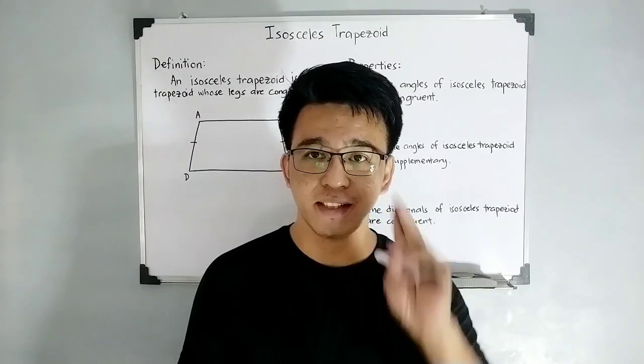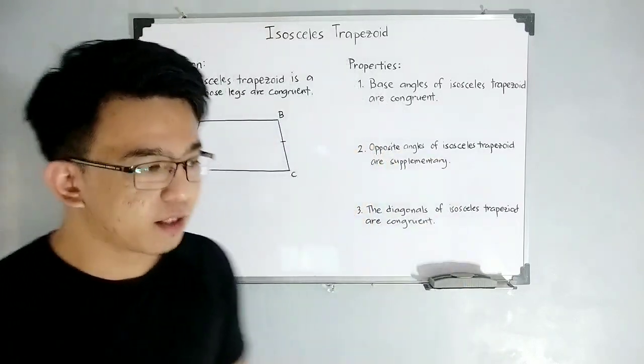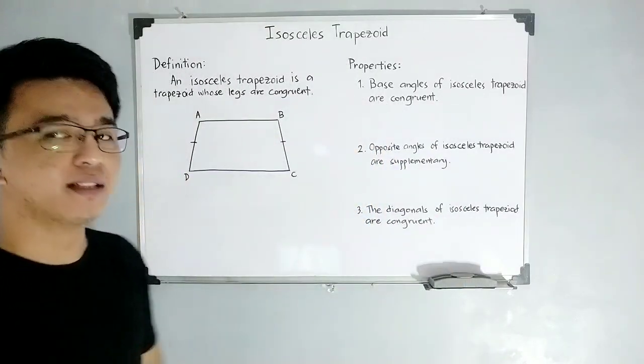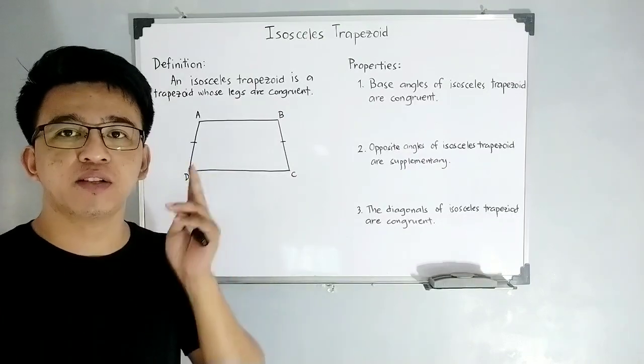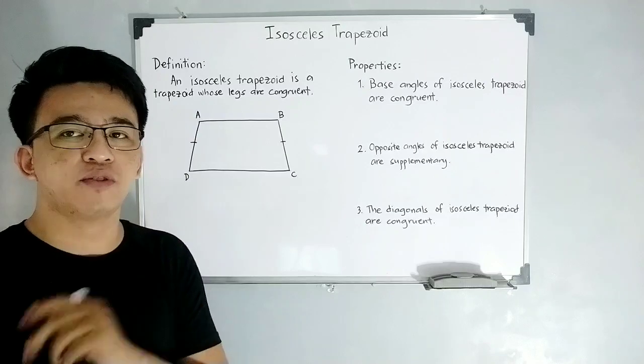Again, I'm Teacher Gon. Let's do this topic. So by the way guys, before I start discussing this, isosceles trapezoid is considered as a special trapezoid. A special trapezoid.